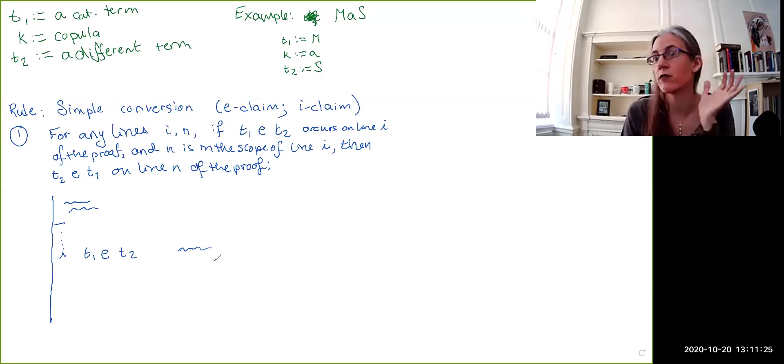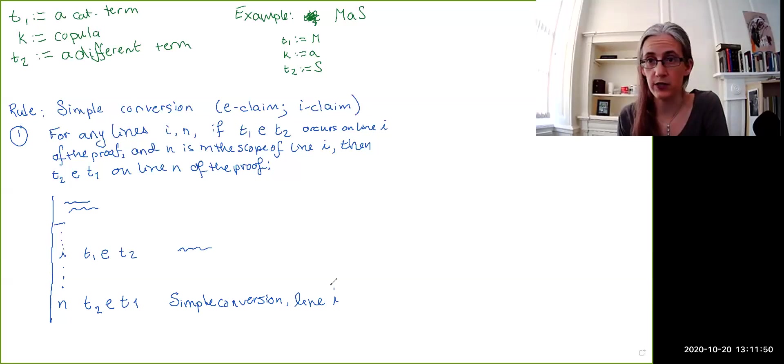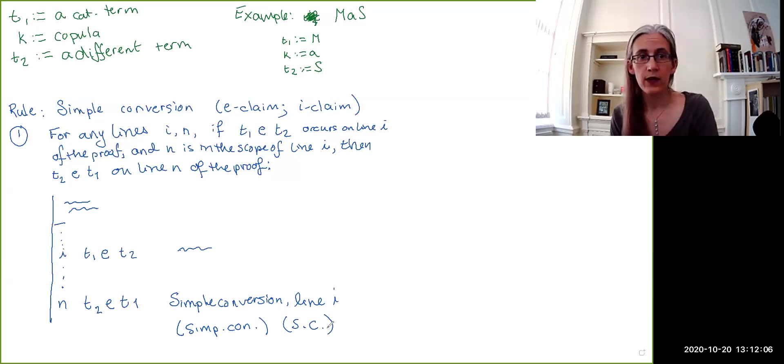with some sort of annotation. We don't know what. So, if we have that, then later on, we can write down on line n, T2, E, T1. And the justification for this is going to be simple conversion, and we cite the line that has the proposition that we converted, line i. Then, sometimes we will abbreviate this to simple conversion, or sometimes even just to SC. So, that's the first version of the rule.